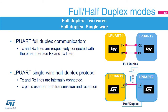The LPUART supports full-duplex communication, where the TX and RX lines are respectively connected with the other interface's RX and TX lines. The LPUART can also be configured for single-wire half-duplex protocol, where the TX and RX lines are internally connected. In this mode, only the TX pin is used for both transmission and reception. The TX pin is always released when no data is transmitted, acting as a standard I/O in idle or reception states. The I/O must be configured with the TX pin in alternate function open drain mode with an external pull-up resistor.